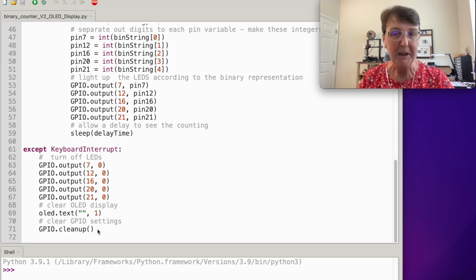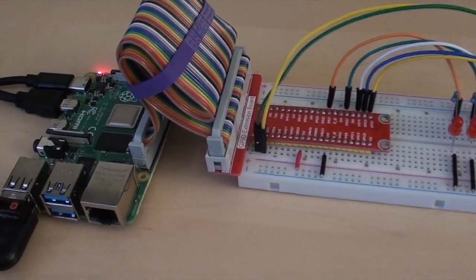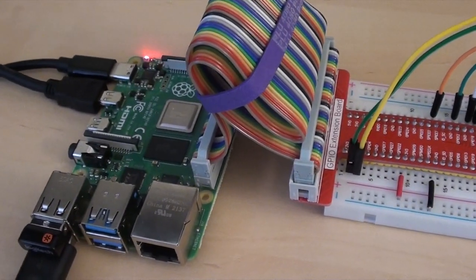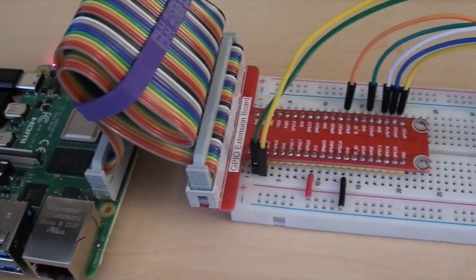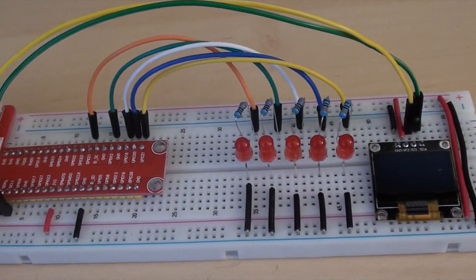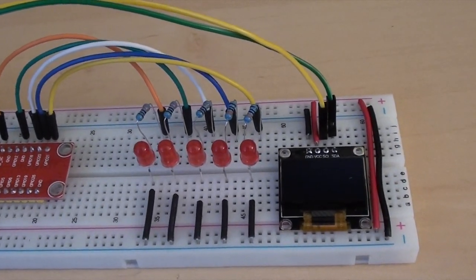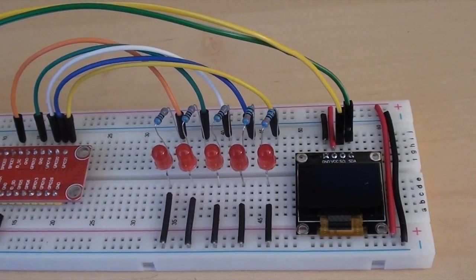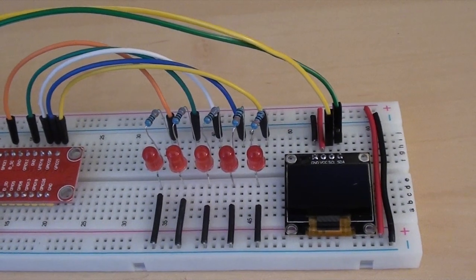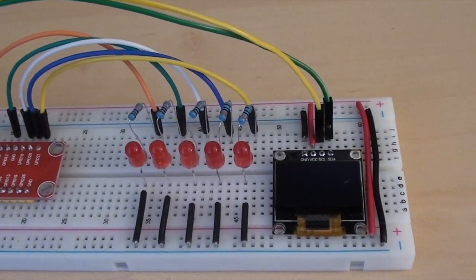So now let's see the demo. Here's the circuit, take a quick look at it: Raspberry Pi, ribbon cable, extension board, there are the five LEDs that'll light the binary sequence, and the OLED screen that I've added to the project so we can see the binary number at the same time. So we'll kick it off.